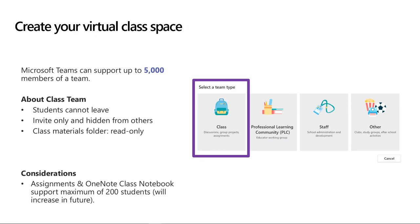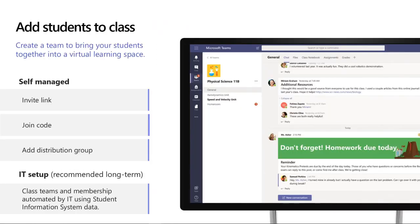When adding students to your class, there are self-managed ways: an invite link students click to join, a join code you share via email, adding a distribution group if an Office 365 group already exists, or adding students individually by email or name. For the long term, the IT recommendation is that class teams and membership can be automated using student information system data — meaning you as a teacher won't necessarily have to add students yourself.